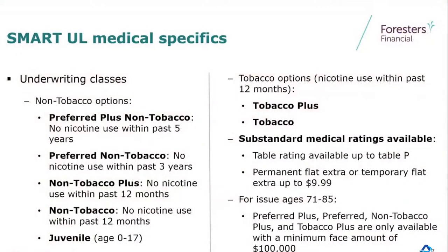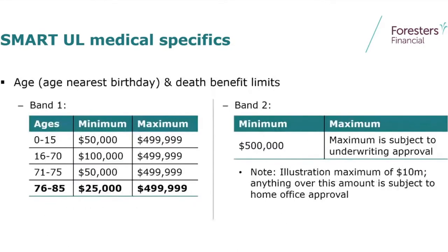Now, medical — a great product on the medical side as well. All the normal underwriting classes, preferred plus all the way down to juvenile. If you have somebody who is a tobacco user, we've got some great tobacco rates. And we do periodically have those that are substandard, and I think you'll find those acceptable as well. Looking at both non-med and medical, you see all the complements that are there.